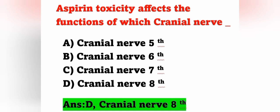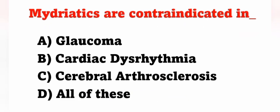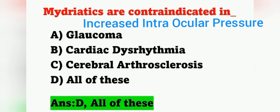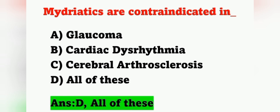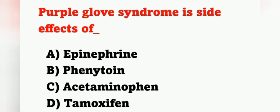Next question: mydriatics are contraindicated in — option A: glaucoma, option B: cardiac dysrhythmia, option C: cerebral atherosclerosis, option D: all of these. Mydriatics are drugs that dilate the pupil and are contraindicated when the patient has glaucoma, cardiac dysrhythmia, or cerebral atherosclerosis. All of these is the correct answer.